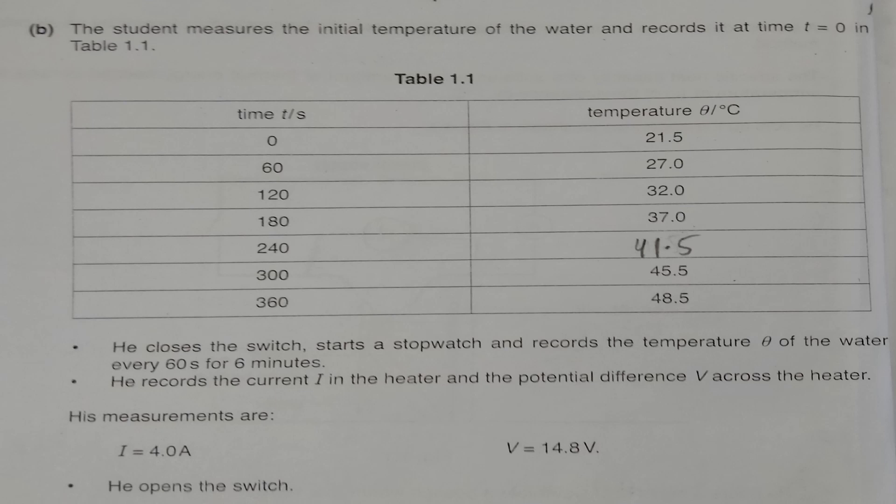The student made a table called table 1.1. The examiner says the student closed the switch, started the stopwatch, and recorded the temperature of water every 60 seconds for 6 minutes. The difference in time intervals is 60 seconds, and the student recorded temperature values in table 1.1.